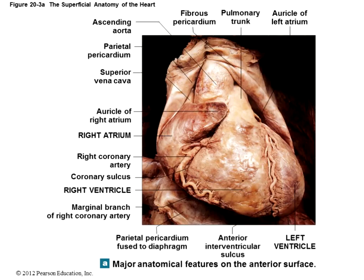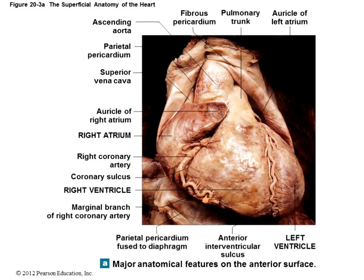Here we have an actual heart where the structures are the same. We can identify the coronary blood vessels, the coronary sulcus, the interventricular sulcus, left ventricle, right ventricle, right atrium, auricle of the right atrium, a piece of the left auricle, the aorta, and the pulmonary trunk. The superior vena cava is visible; the inferior vena cava and pulmonary veins would require turning the heart to the posterior side. The marginal artery hangs off the right side.